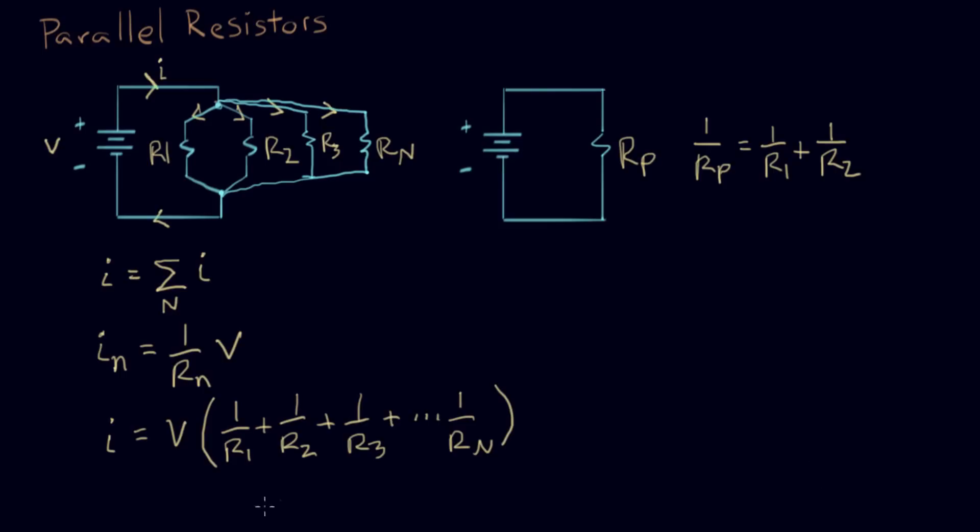And we do the same thing as we did before, which was we say, okay, this expression here is equivalent to one parallel resistor. This whole guy here is going to become one over Rp. That gives us a way to simplify any number of resistors down to a single parallel resistor.